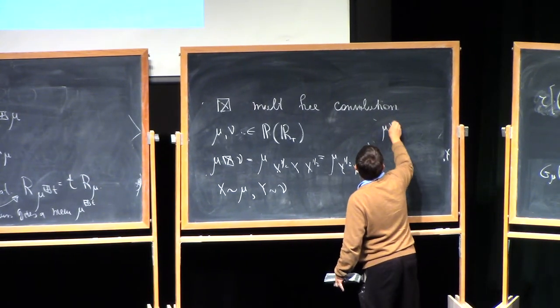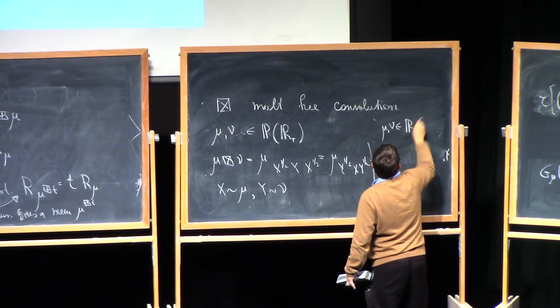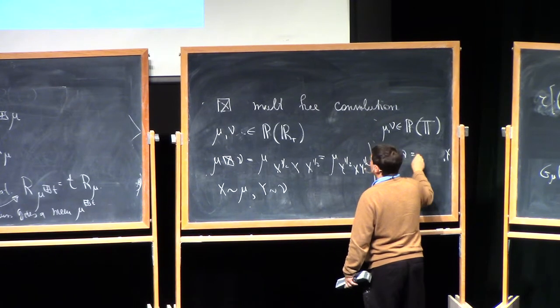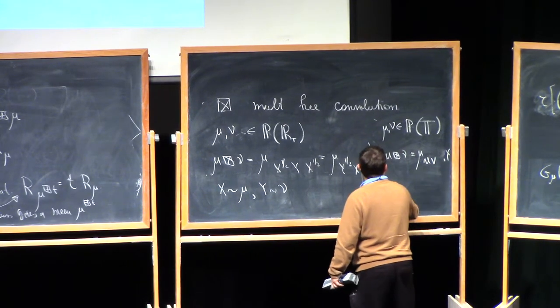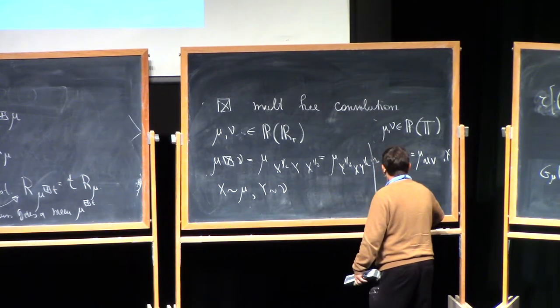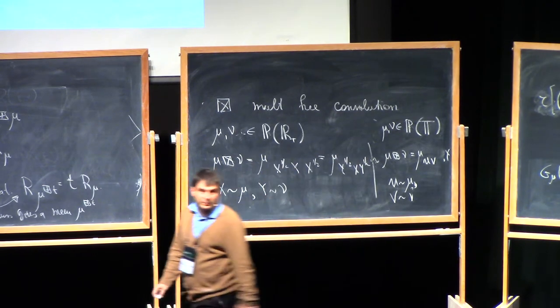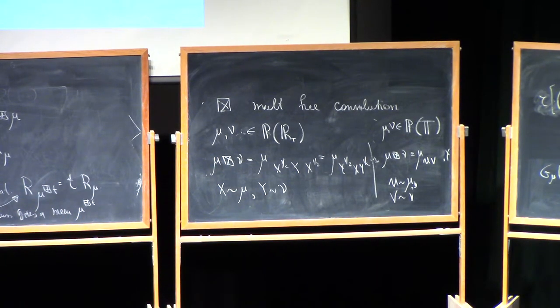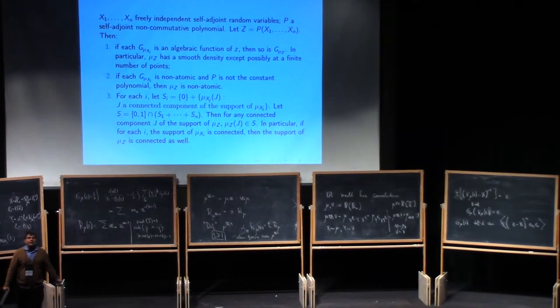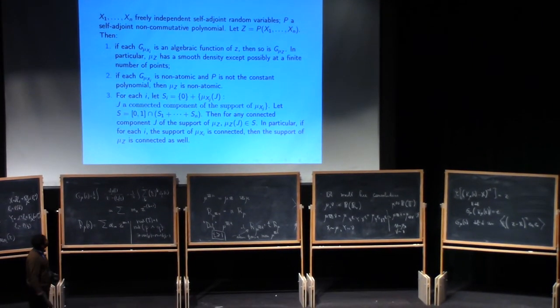It's also defined for unitaries. If I take, similarly, mu, nu probability measures on the unit circle, then I can define mu box plus nu to be the law of uv, where u is a unitary distributed according to mu, and v is a unitary distributed according to nu. So there's also an analytic thing to do to compute that. But now you could say, what other things you can do? Well, you can, in principle, do a much more general operation. You can apply any non-commutative polynomial.